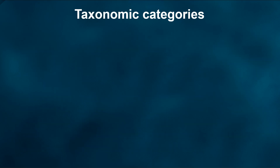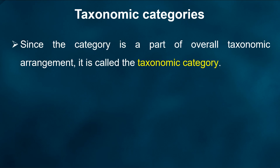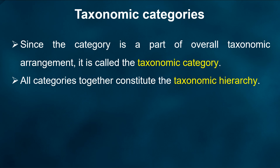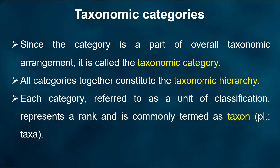During classification, each organism is placed into a category. Since the category is a part of overall taxonomic arrangement, it is called the Taxonomic Category, and all categories together constitute the Taxonomic Hierarchy. Each category, referred to as a unit of classification, represents a rank and is commonly termed as taxon.